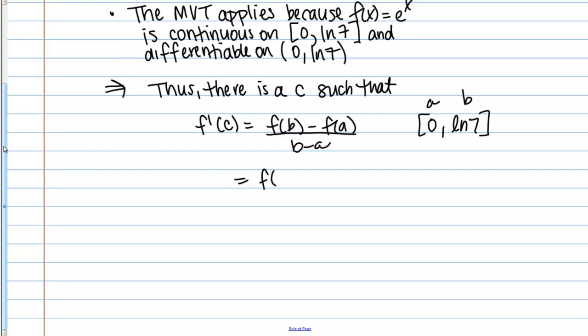F of B becomes F of natural log of 7. F of A is F of 0. Then on the bottom I have natural log of 7 minus 0. Remember my function was E to the X. So I want to use that information as well. If I plug that in I get E to the natural log of 7. I'm evaluating my function at the point natural log of 7 minus E to the 0 over natural log of 7 minus 0.